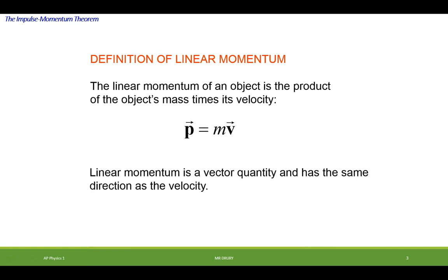It's a vector quantity, since velocity would be a vector, so momentum would have to be a vector, because you're taking mass, which is a scalar, and multiplying it by velocity, which is a vector. So the units would simply be the units of mass and velocity, or kilogram meters per second.